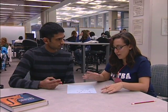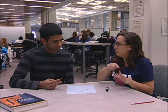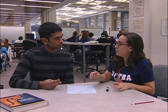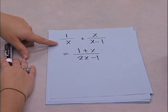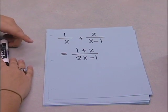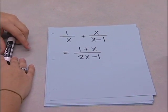When you're multiplying fractions you can multiply across, but when you're adding you can't add across. What you have to do is use a common denominator for the two fractions. So what would be the common denominator between x and x minus 1?